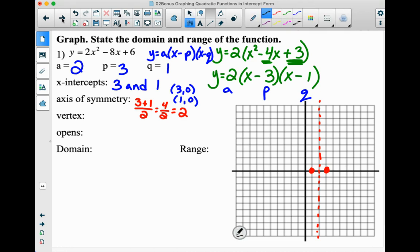Remember, to find the vertex, you take that coordinate, whatever you've got for the axis of symmetry, and you substitute it in for x. So if we go into the original or the factored equation, let's go with the factored equation. y equals 2 parentheses x minus 3 parentheses x minus 1. So 2 minus 3 is negative 1, 2 minus 1 is 1, 2 times negative 1 is negative 2, times 1 is negative 2.